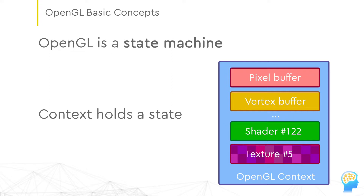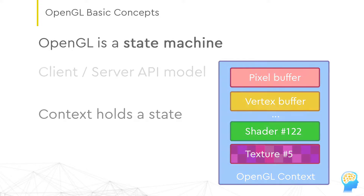The context also holds the current set of buffers — for example, loaded raster images for textures or arrays of geometry, usually in the form of vertex coordinates — as well as current shaders and so on.